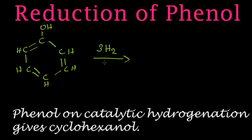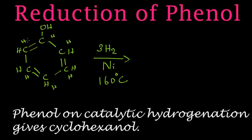We use three molecules of hydrogen gas in the presence of nickel catalyst at around 160 degrees Celsius. The six hydrogen atoms will attach to the carbons — one hydrogen to each carbon around the ring.